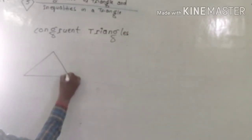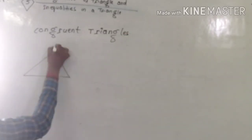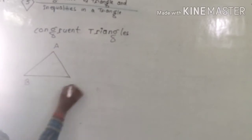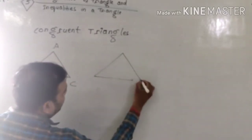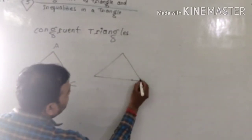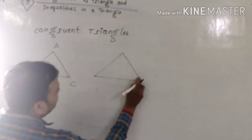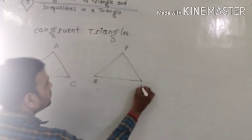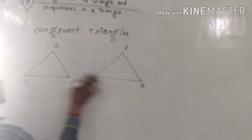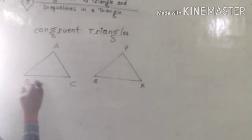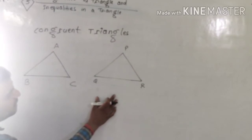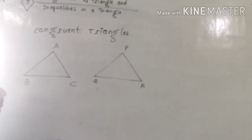Dear students, if triangle ABC and triangle PQR overlap completely, then we say triangle ABC is congruent to triangle PQR.